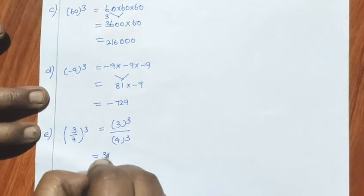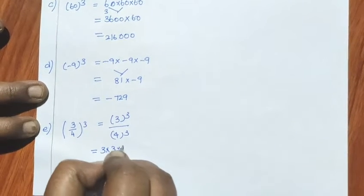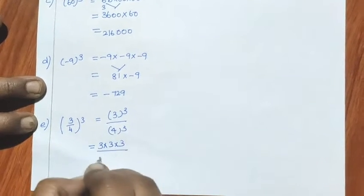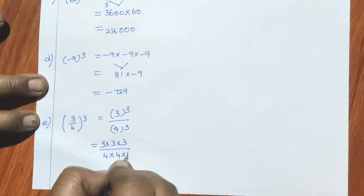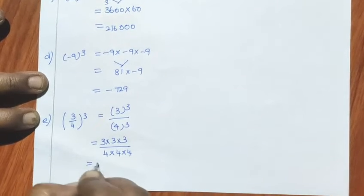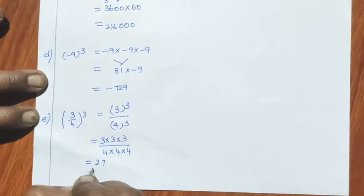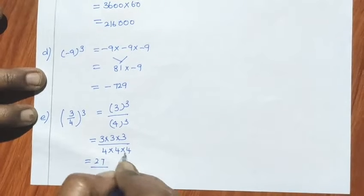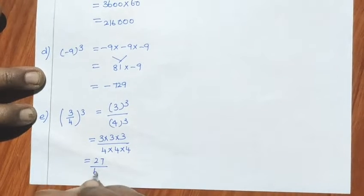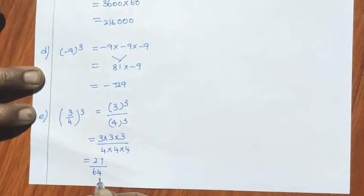How do we calculate: 3 into 3 into 3 divided by 4 into 4 into 4. 3 threes are 9, 9 threes are 27. 4 fours are 16, 16 fours are 64. Answer: 27 by 64.